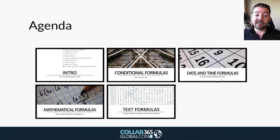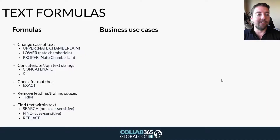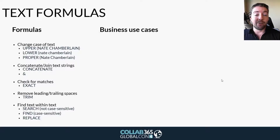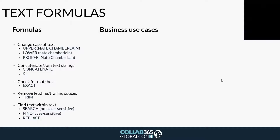The last topic is text formulas. We can change the case of text — when people submit inconsistently with lower and upper case, we can make everything in a column UPPER, LOWER, or PROPER (first letter of each word capitalized). We can concatenate using the CONCATENATE function or the ampersand sign. We can check for exact matches. We can remove leading and trailing spaces — especially useful when people copy and paste into SharePoint. We can also find text within text using SEARCH, FIND, or REPLACE.